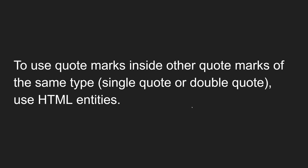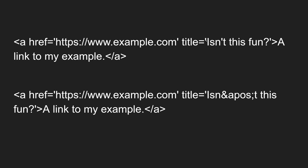The problem comes when you try to use quote marks of the same type inside each other. If you have wrapped the attribute value with double quotes and also want to use double quotes inside, then the problem arises and you need to use HTML entities. All HTML entities start with an ampersand and end with a semicolon. For a single quote, the HTML entity is '&apos;' — apos means apostrophe. The HTML parser will automatically convert '&apos;' into a single quote.